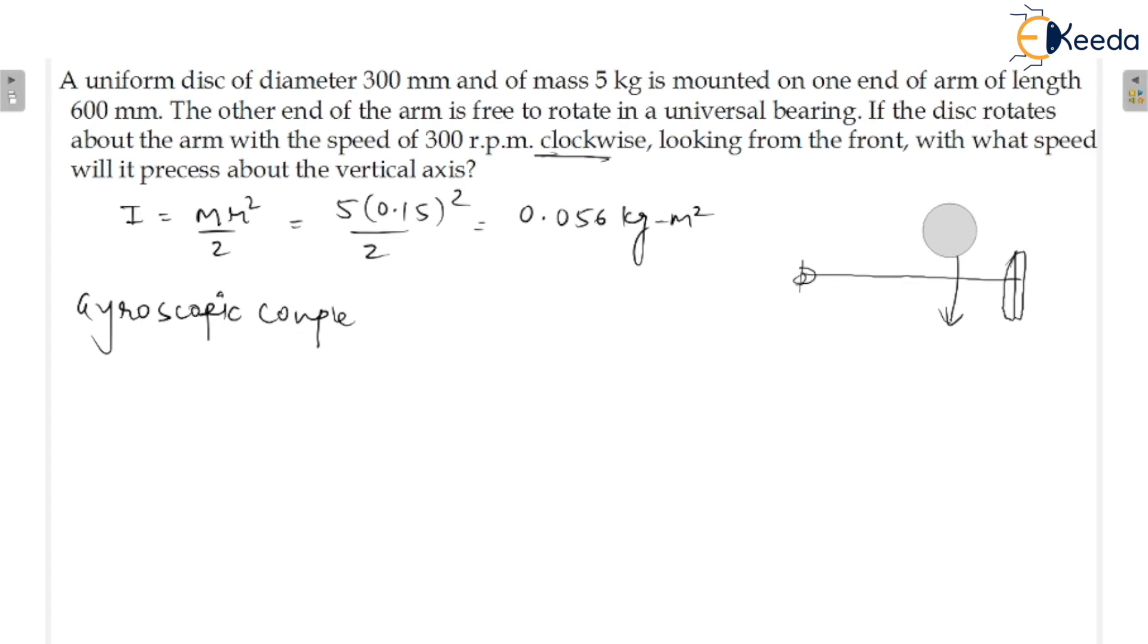So this is clockwise direction looking from the front. When you look from the front, the directions would be like that. Because you are looking from the front side. This is the front. So this would be the clockwise direction, rotation of the disc. With what speed it precesses about the vertical speed. You know precession. Precession means what? Like that. This would be the precession. So now, we need to understand. First, we need to calculate gyroscopic couple.